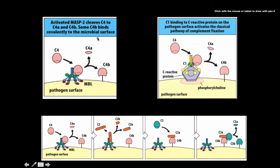So here we see, let me switch to a brighter color. I'm going to use gold. Activated MASP2 is going to cleave C4 into C4α and C4β. Some C4β is going to bind on the microbial surface.